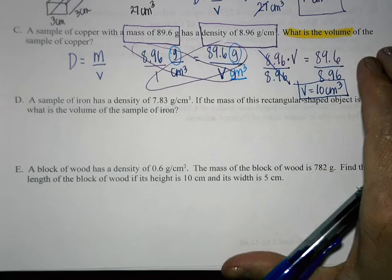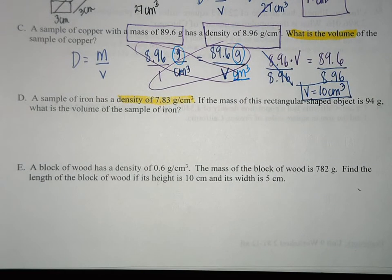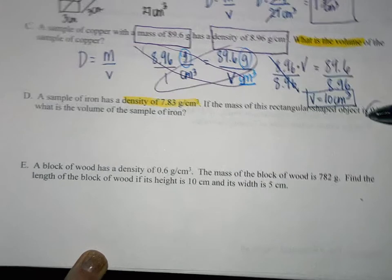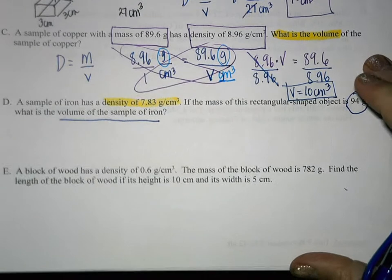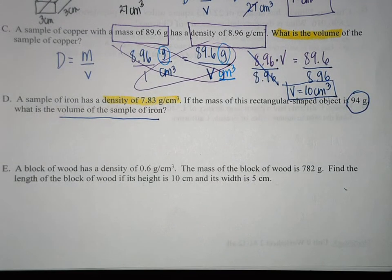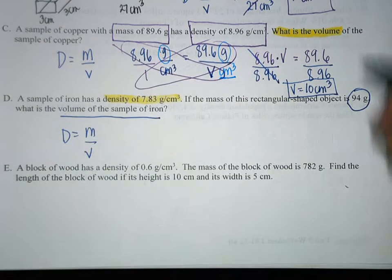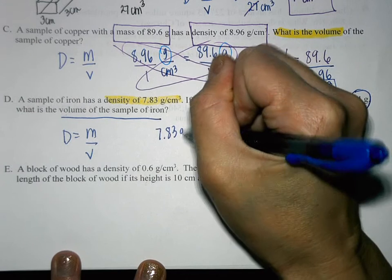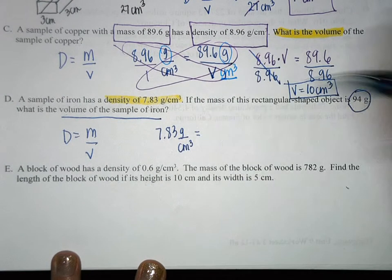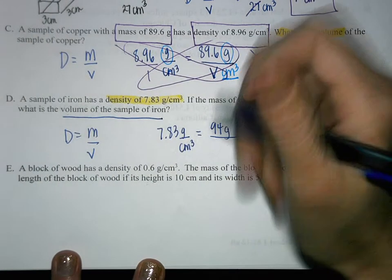Next example: A sample of iron has a density of 7.83 grams per centimeter cubed. If the mass of this rectangular-shaped object is 94 grams, what is the volume of the sample of iron? Again, we have different missing information. Using density equals mass divided by volume: 7.83 g/cm³ = 94 grams divided by V.